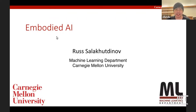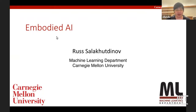Russ received his PhD in Computer Science from the University of Toronto, then spent two postdoc years here at MIT before joining the University of Toronto and later moving to CMU. Russ's primary interests lie in deep learning, machine learning, and large-scale optimization.